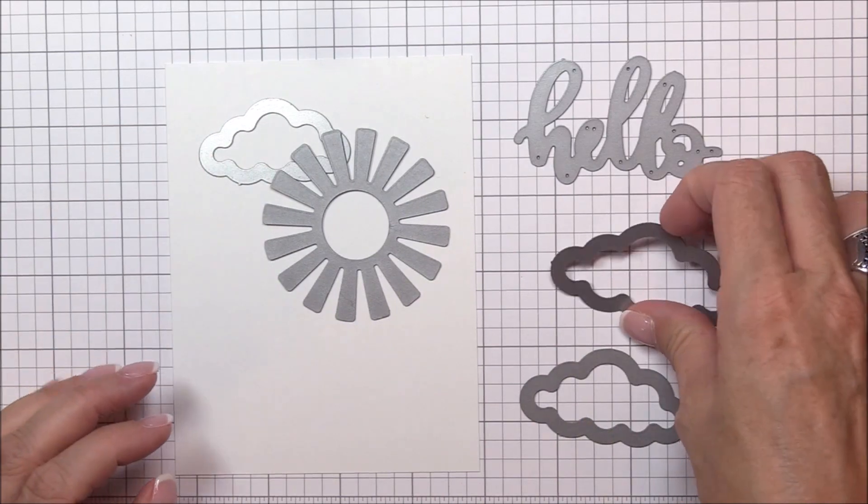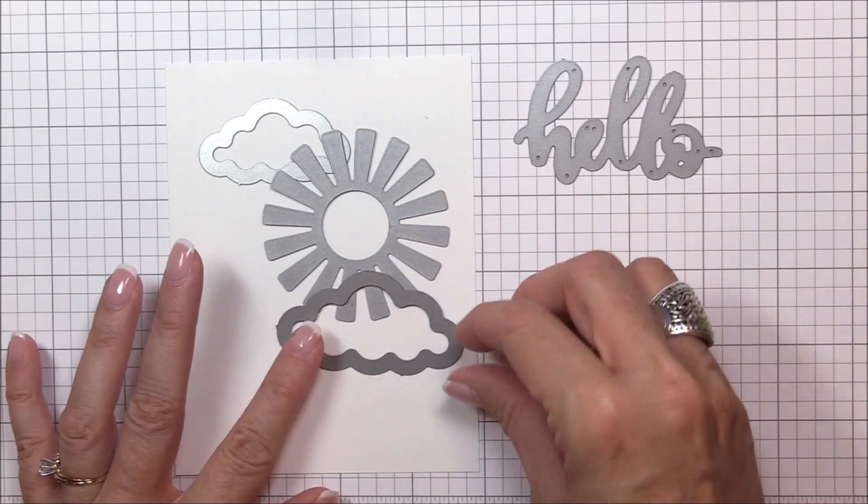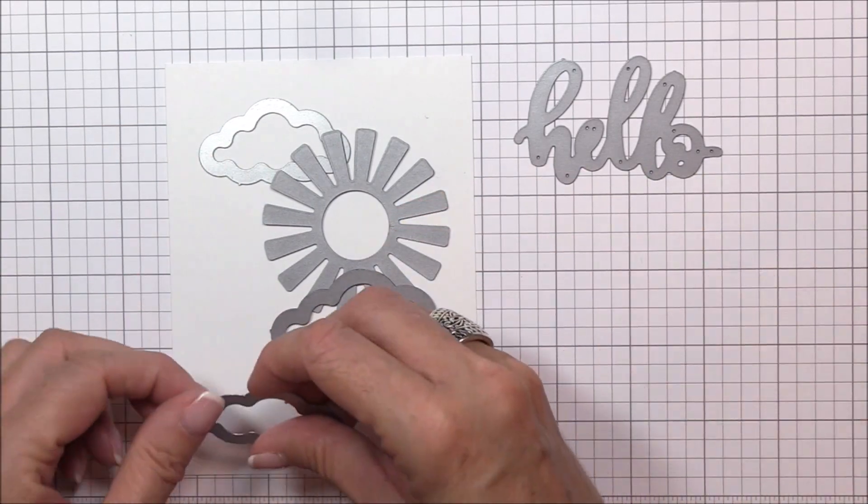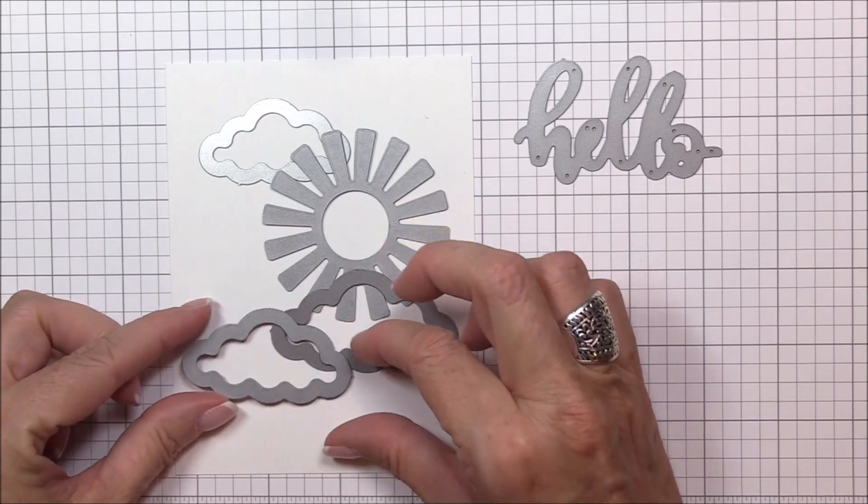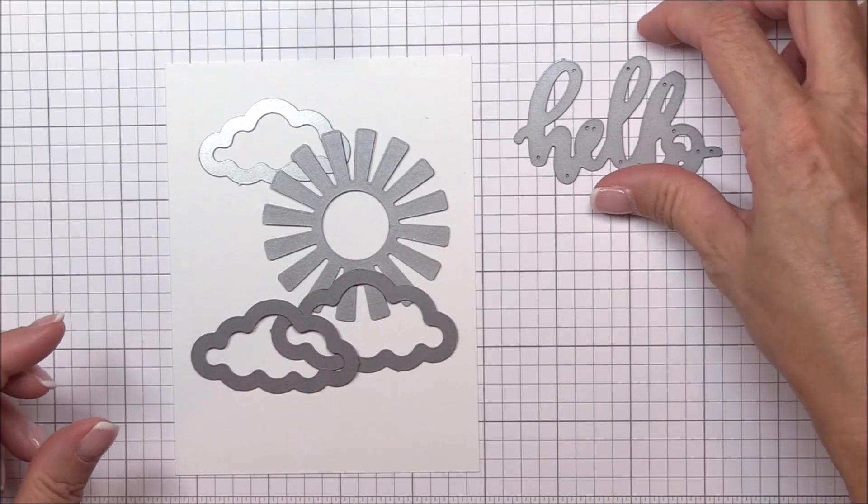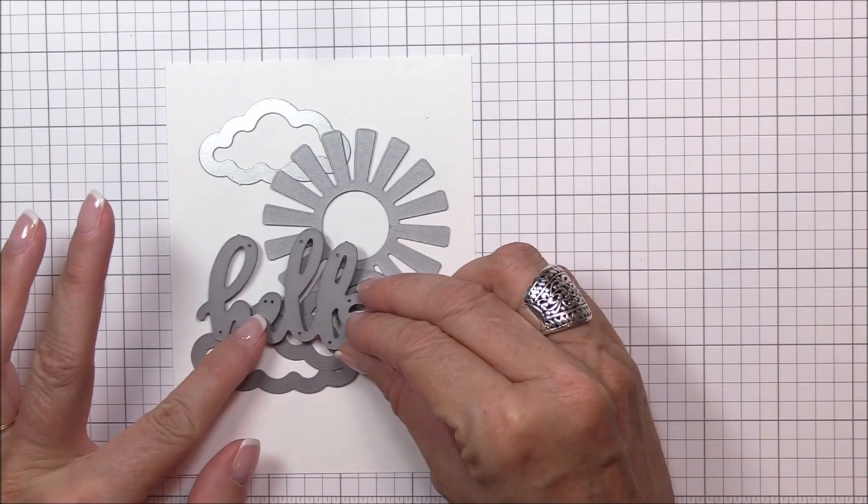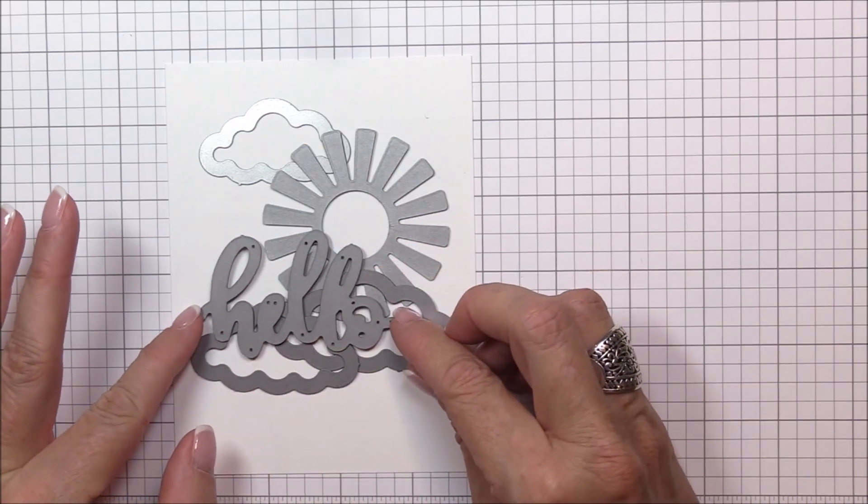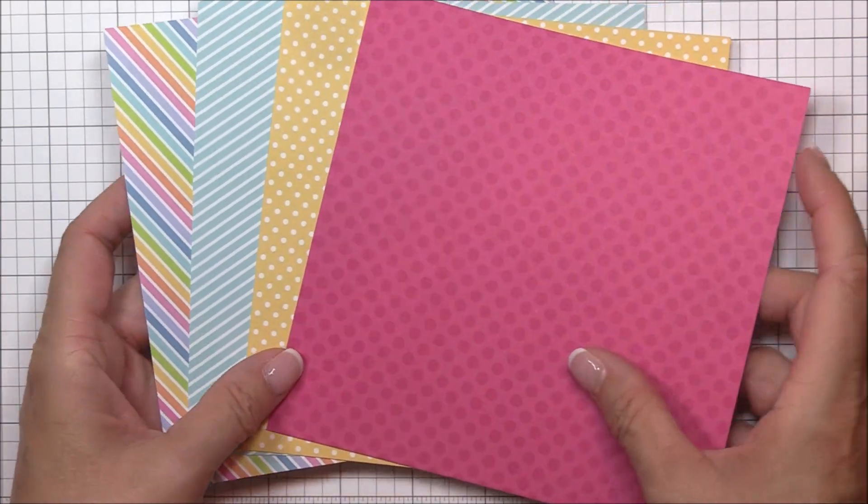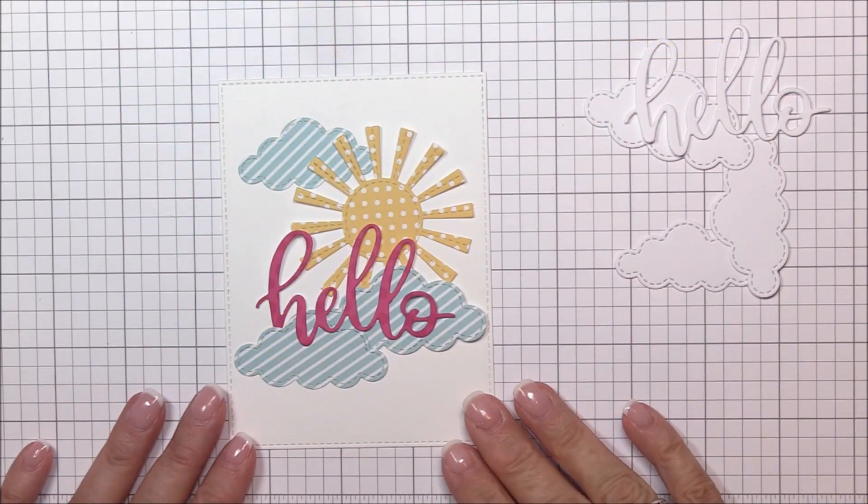The basic premise behind inlaid die cutting is that you start with the die cut that's in the background, or the furthest from the front of your design, and end with the die cut in the forefront, or closest to the front. I'm laying out the dies on my image panel to get an idea of where I want everything to be and where I need to start my die cutting.